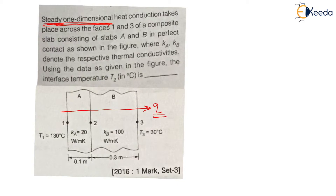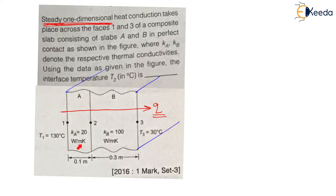For this heat flow, the perpendicular area will be this width marked with blue color — this width into this height — which is the perpendicular area for the direction of heat flow. KA and KB denote the respective thermal conductivities. For slab A, the thermal conductivity KA is 20 W/mK, and for slab B, KB is 100 W/mK. Using the data given in the figure, we need to find the interface temperature T2 in degree Celsius.